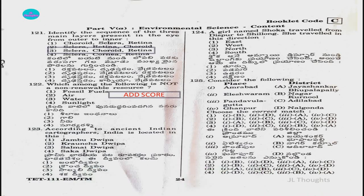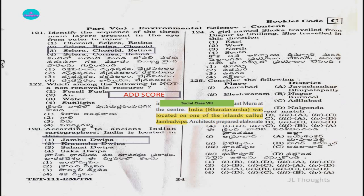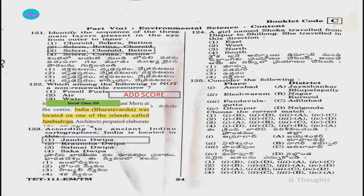Question number 123: According to ancient Indian cartographers, India is located in — option 1: Jambu Dwipa; option 2: Karanch Dwipa; option 3: Salmai Dwipa; option 4: Sakha Dwipa. The answer is option one, Jambu Dwipa. This is given in the social textbook class 8, where it is written that India (Bharat) was located on one of the islands called Jambu Dwipa.